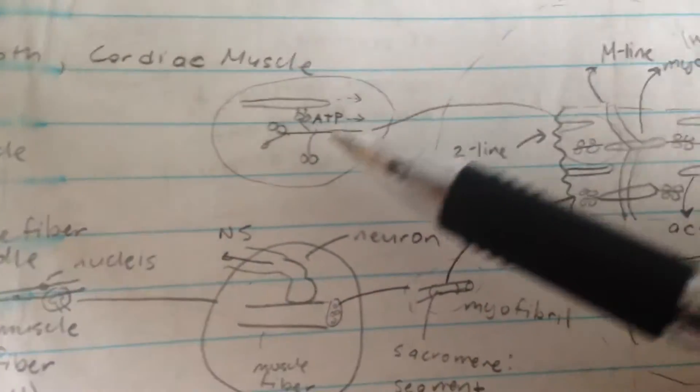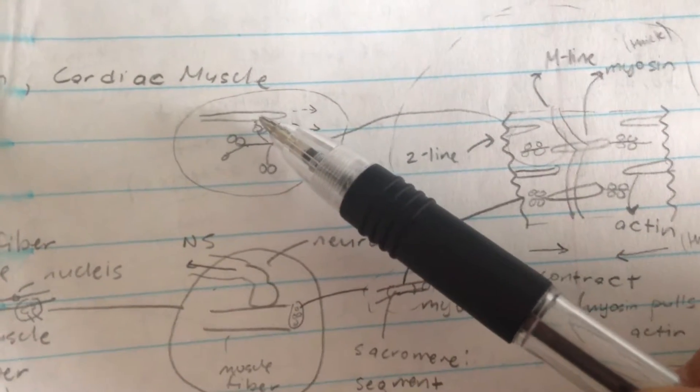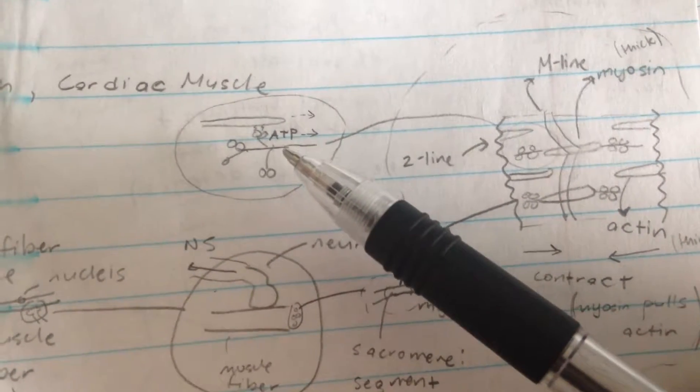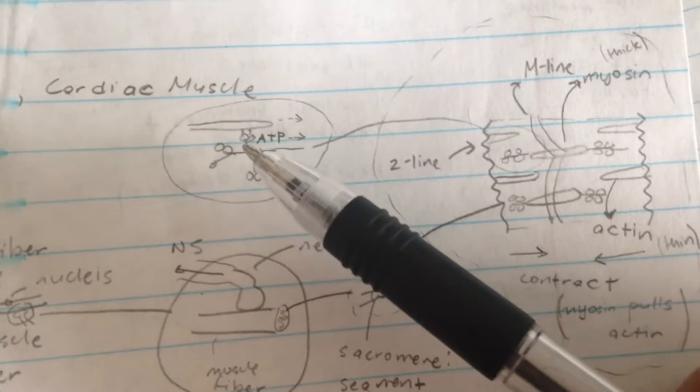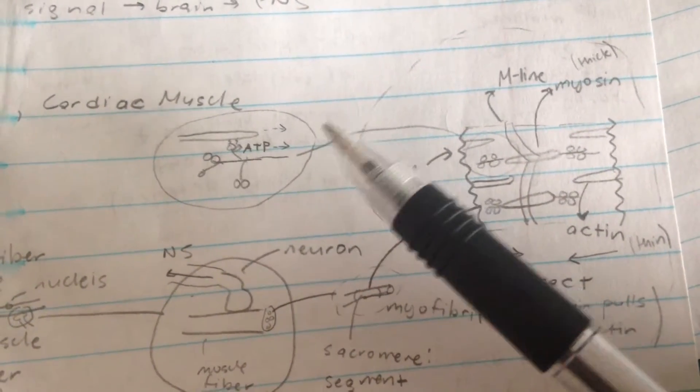You can see that closer over here. This is the myosin, and this is the actin. The myosin uses ATP to connect to the actin and pull it closer together.